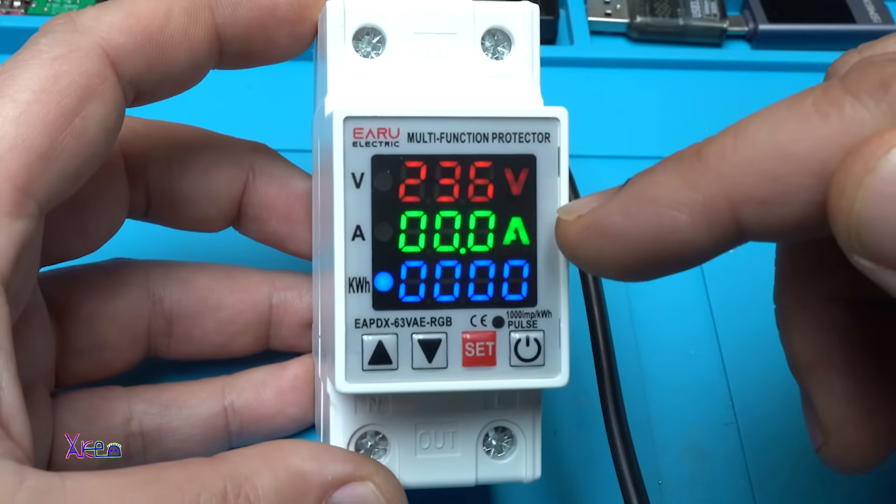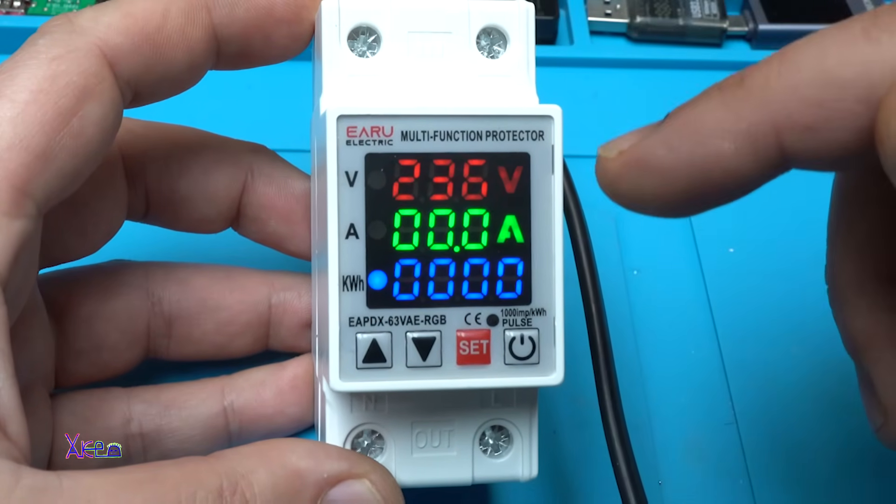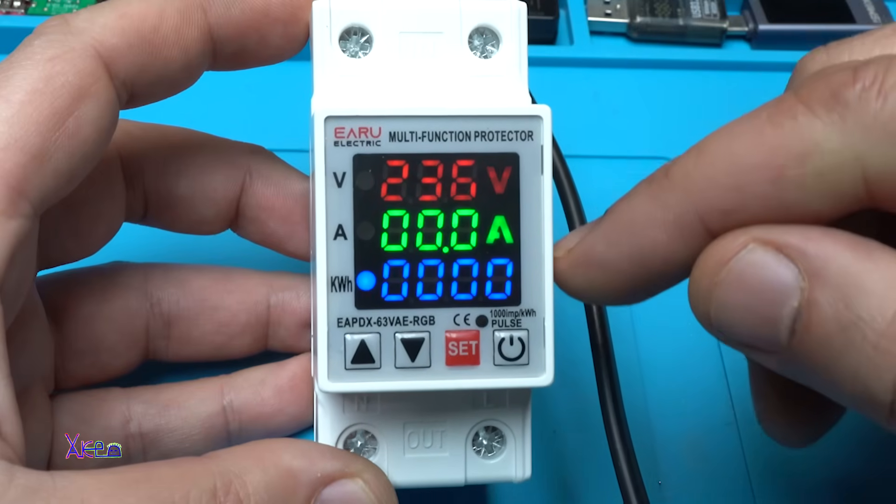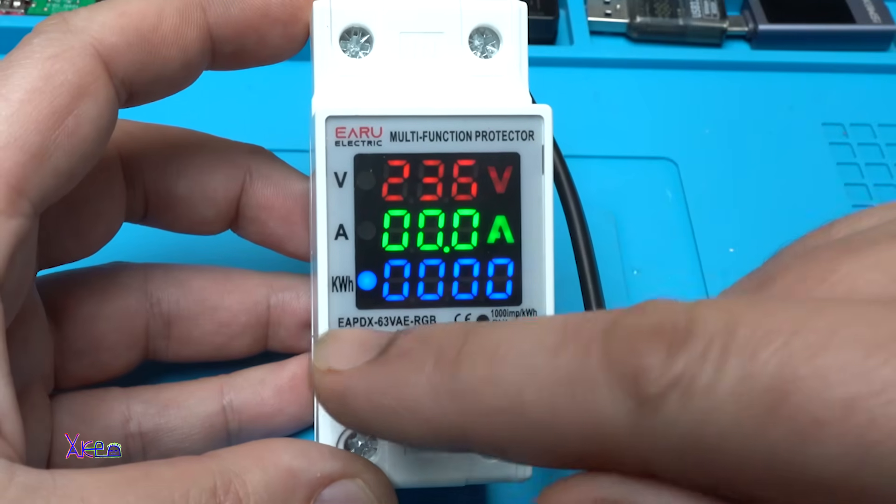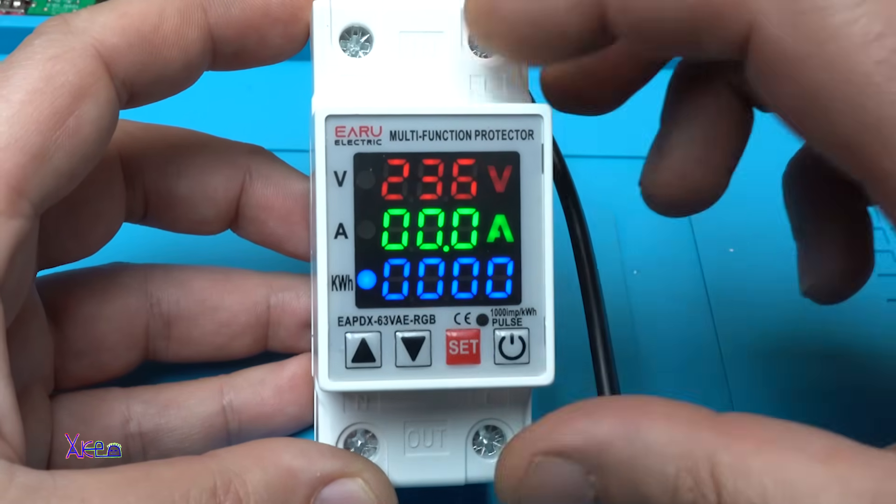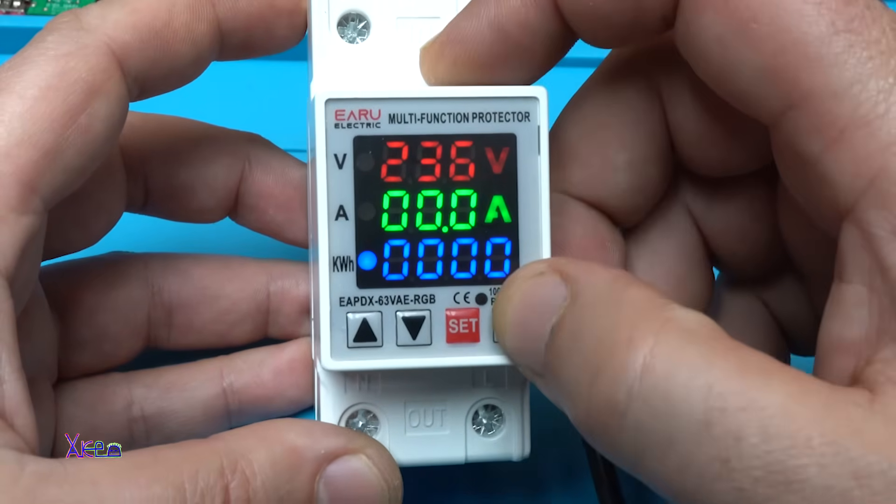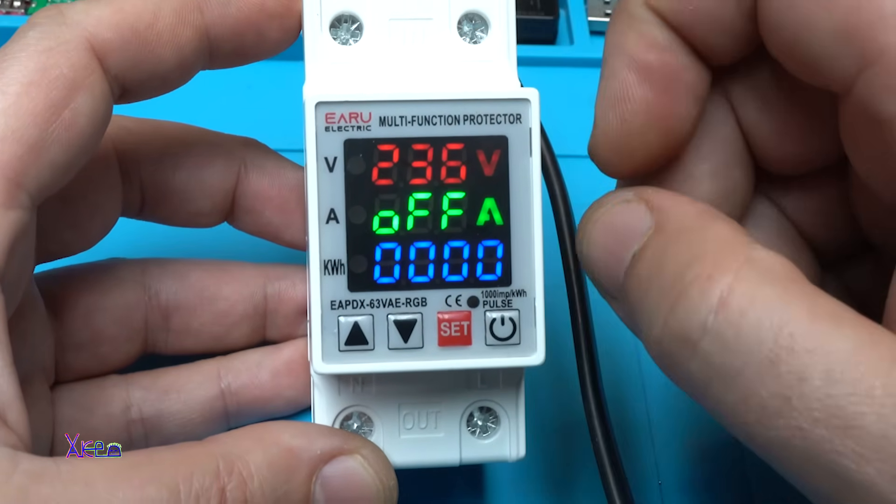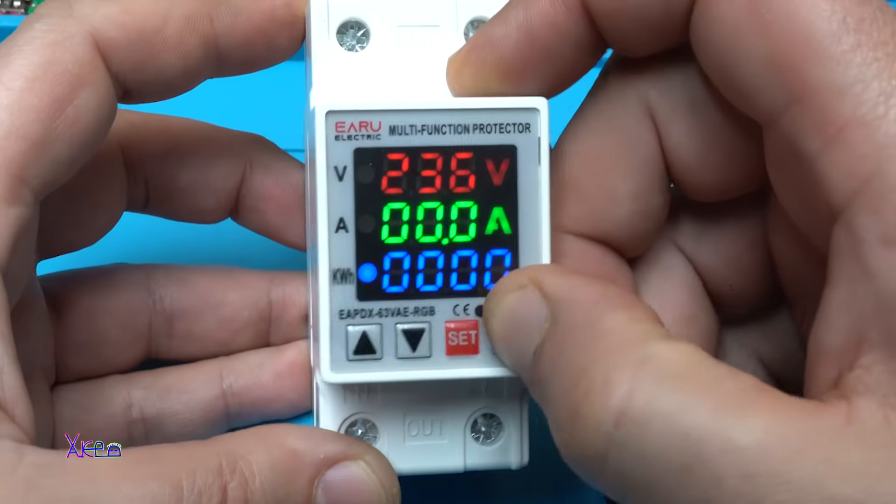It shows the voltage right now. It's 236, little bit over. And that can be set of amperes and kilowatt hours. All right. Off. You can turn off the module, not to work, and on.